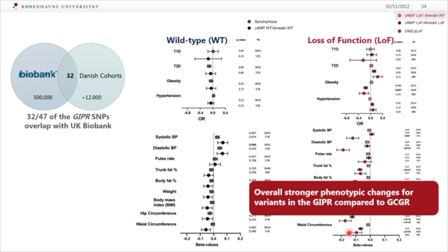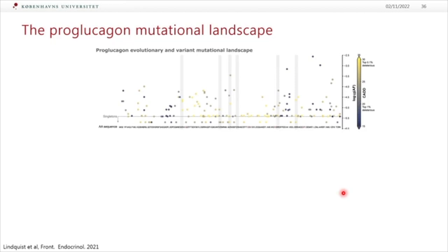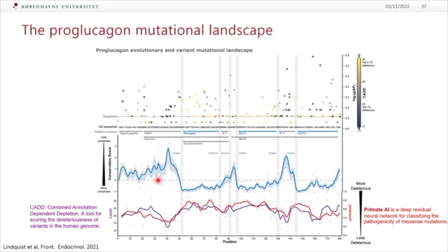There are clearly much stronger phenotypic changes in the GIP system than in the glucagon receptor. What about the glucagon-derived peptides? We looked into the pro-glucagon gene and three different databases. We identified 35 of 184 unique missense variants present in all three databases, with some present in two, and some in only one cohort.